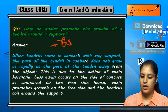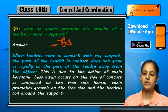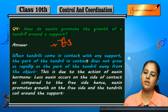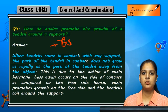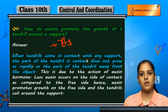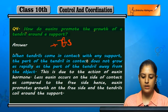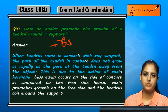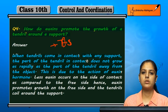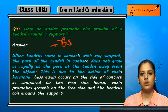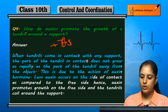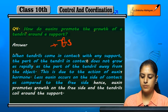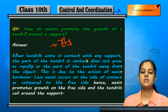As for the part of the tendril away from the object — joh object se door hai, jo contact me nahi hai — woh in comparison to the part jo contact me hai, thoda jaldi grow karega. This difference in growth is due to the action of auxin hormone.